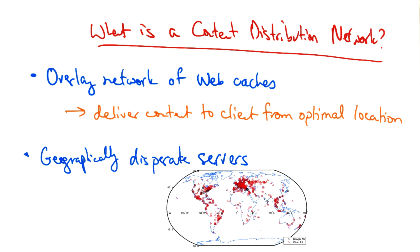These CDNs can often be quite extensive. Here is a global map depicting the deployment of the Google cache servers around the world, as mapped in a recent project by researchers at the University of Southern California. As you can see, these web caches can be quite extensive, and in many cases, there's a concerted effort to place caches as close as possible to users.